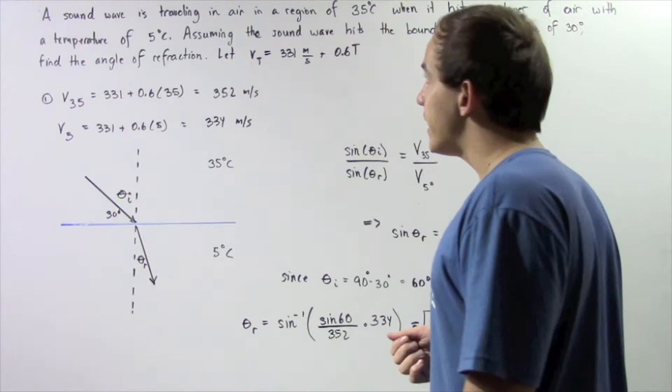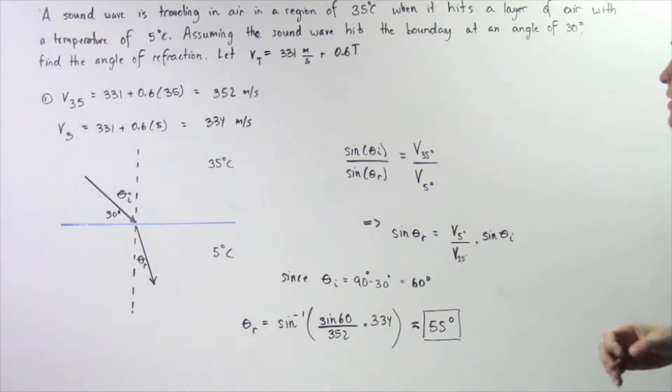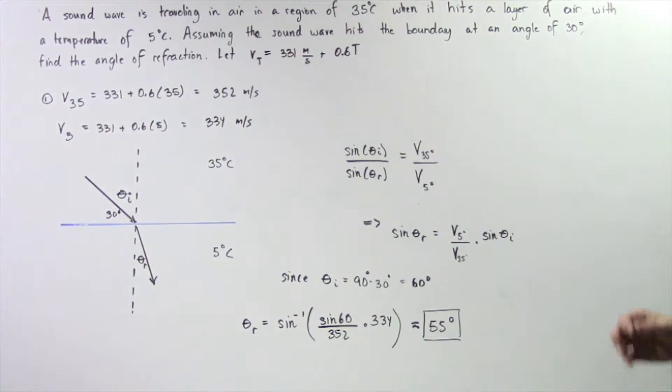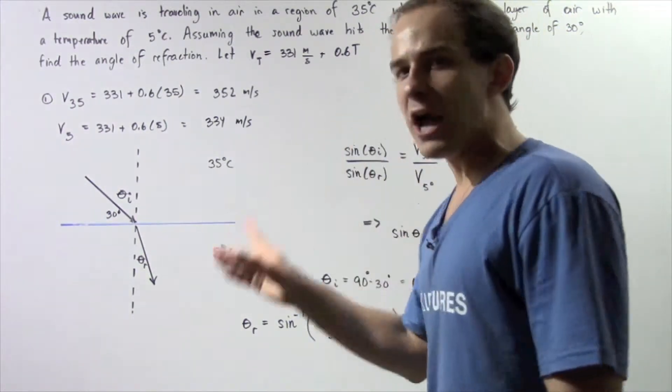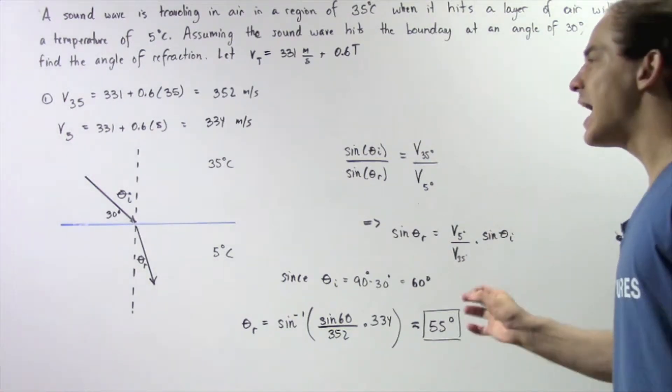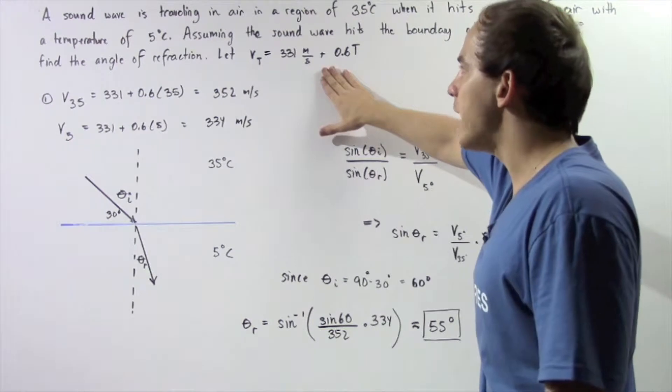Suppose a sound wave is traveling in air in a region of 35 degrees Celsius when it hits a layer of air with a temperature of 5 degrees Celsius. Assuming the sound wave hits the boundary at an angle of 30 degrees, we want to find the angle of refraction knowing that the relationship between the velocity of the sound in air is given by the following equation.